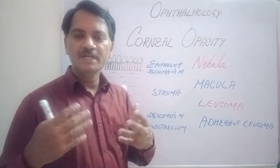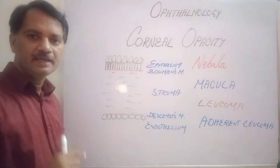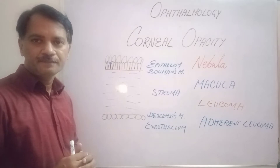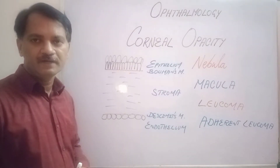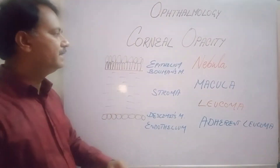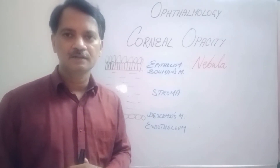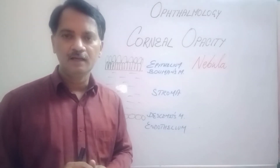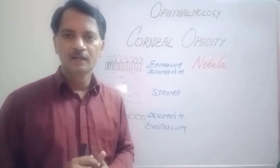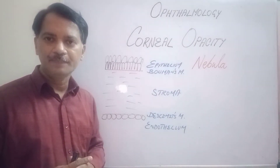The reason there are different types of corneal opacity is that the cornea has five layers — some say six including Dua's layer. Depending upon which layers are affected by trauma or ulcer, a scar will develop. It is important to know that Bowman's membrane and the stroma cannot regenerate following injury, and will be replaced by scar tissue.